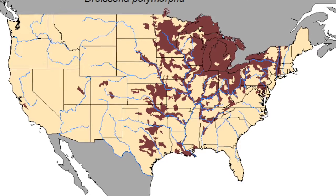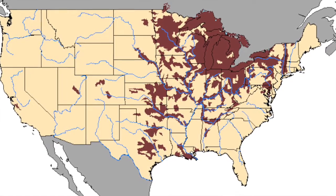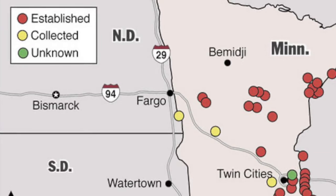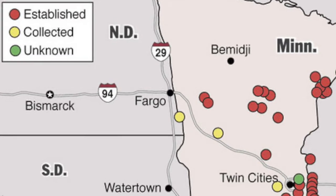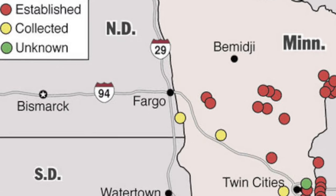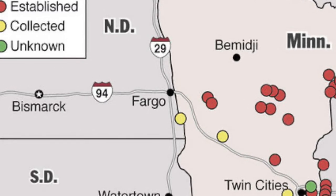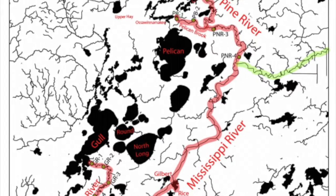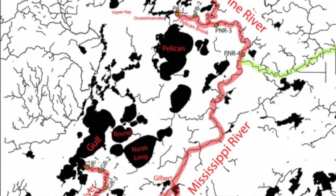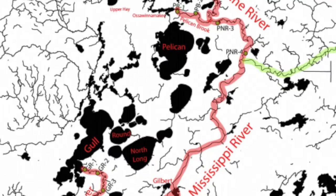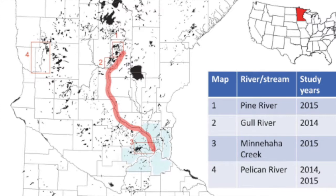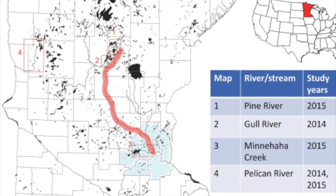Four lake and stream systems were involved in this field study: the Pine River, Gold River, Pelican River, and Minnehaha Creek systems. These lakes and streams were chosen due to their high potential for downstream dispersal. They were labeled as infested or not infested, and connected or not connected, and a two-by-two table was constructed. A G-test was used to determine, one, whether zebra mussel infestation incidence was dependent on being upstream or downstream of a connected infested lake, and two, the influence of stream distance on zebra mussel infestation.